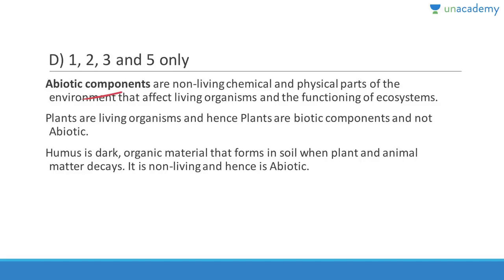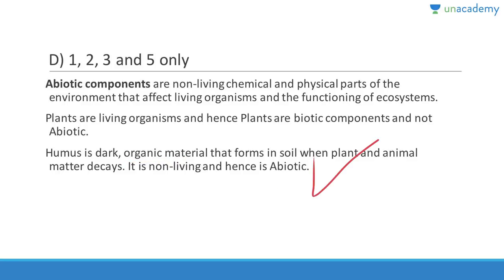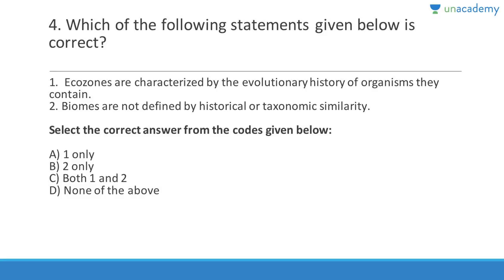Abiotic components are the non-living chemical and physical parts of the environment that affect living organisms and the functioning of the ecosystem. Plants are living, so they are not abiotic. Humus is dark organic material which is non-living and hence it is abiotic. Question four: Ecozones are characterized by the evolutionary history of organisms they contain — that is correct. Biomes are not defined by historical or taxonomical similarity — that is also correct.